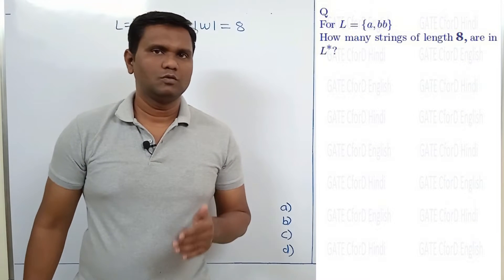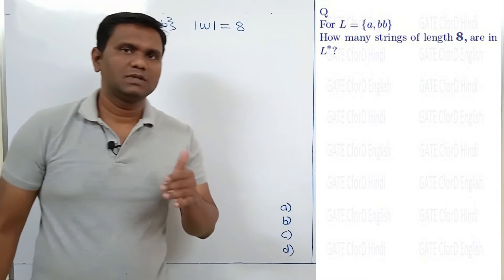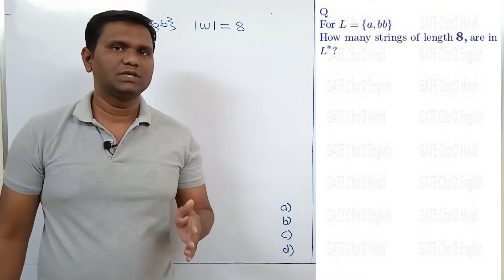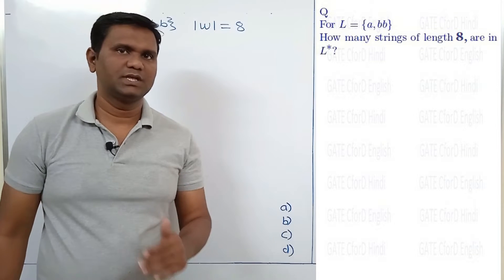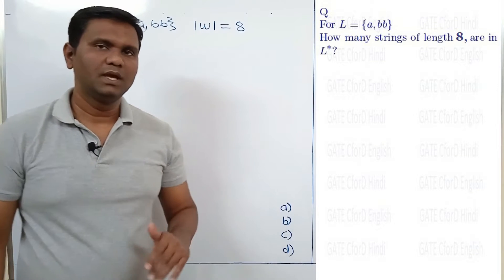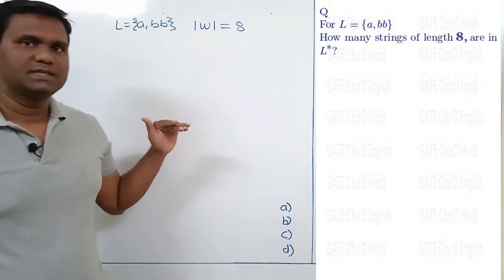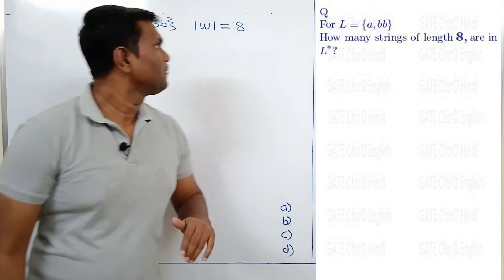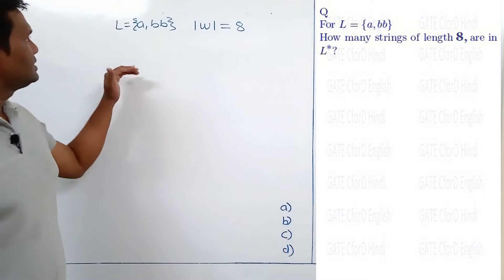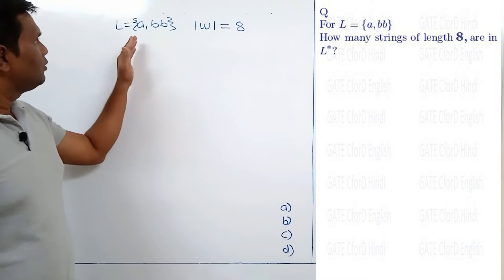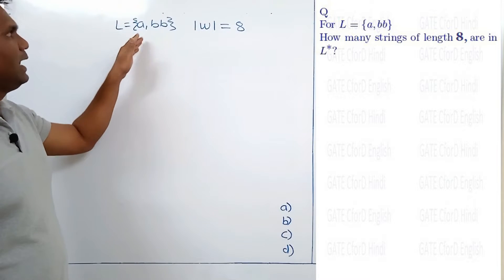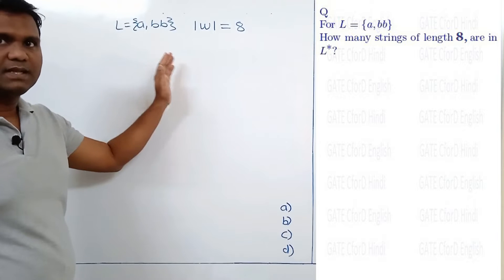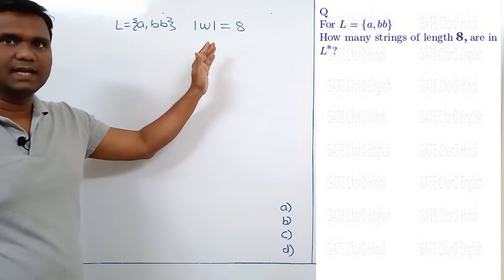We have solved this problem before using only calculations of permutation and combination. Here we will see how this problem is similar to the Fibonacci function. The problem is: how many strings can be formed using only A and BB such that the length of the string is 8?